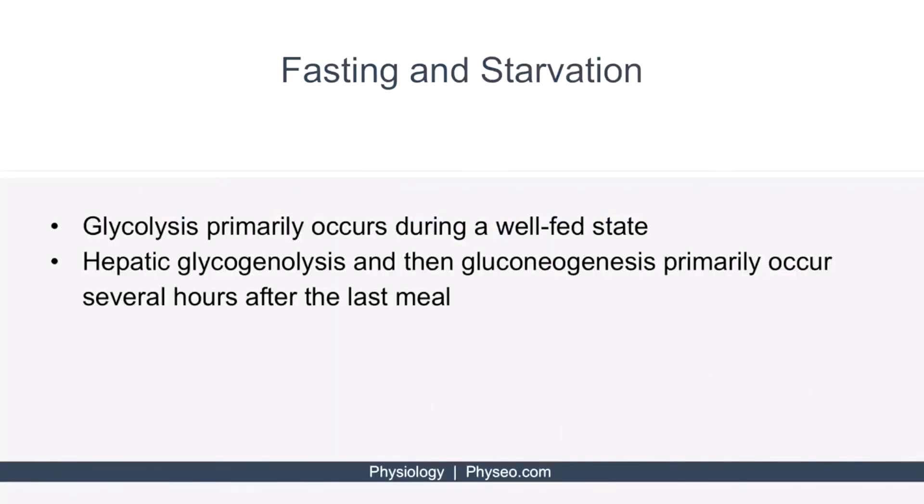So in review, glycolysis occurs when the body has sufficient energy, and this is in response to insulin. During periods of fasting or starvation, glucagon is the predominant hormone in the body, and it causes hepatic glycogenolysis and gluconeogenesis. And this starts to occur several hours after the last meal.